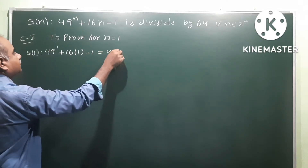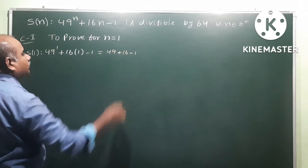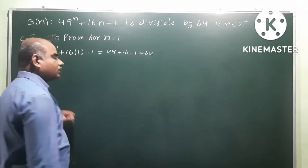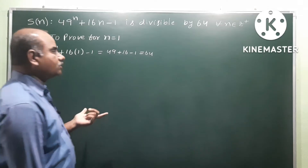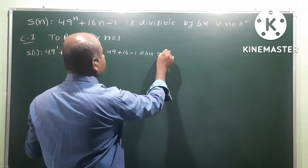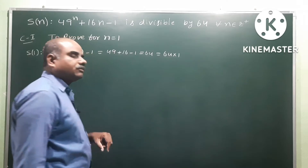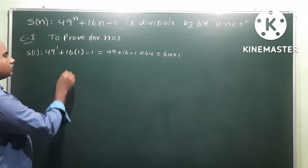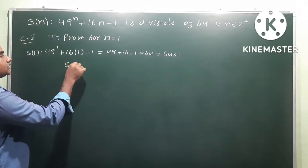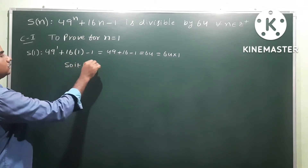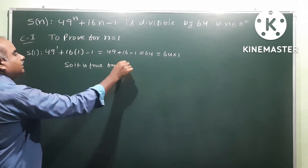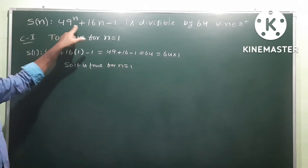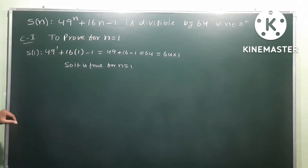S(1) = 49^1 + 16 × 1 - 1 = 49 + 16 - 1 = 64. So 64 is divisible by 64 exactly once. Therefore, the statement is true for n = 1, and S(1) is divisible by 64.